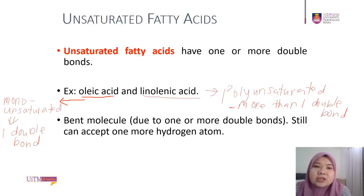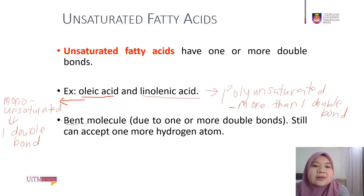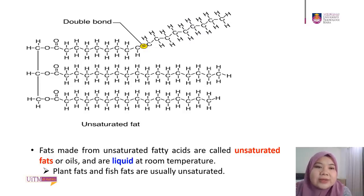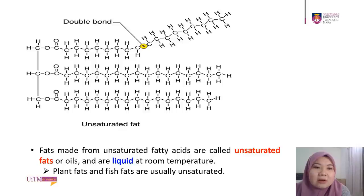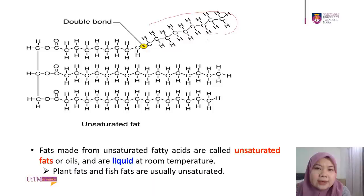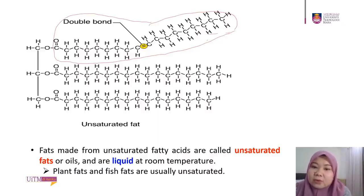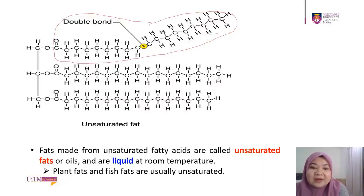Regarding shape, unsaturated fatty acids are bent. The bend is due to the presence of one or more double bonds, and they can still accept one more hydrogen. Fats made from unsaturated fatty acids are called unsaturated fats — or oils — and they are liquid at room temperature. Plant fats and fish fats are usually unsaturated.